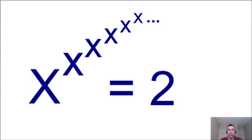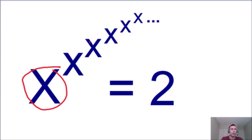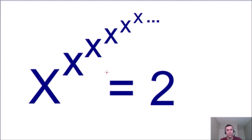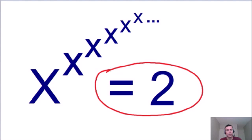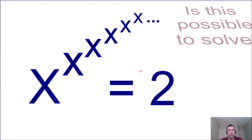Welcome to another one of my math riddles. Here we have a fun problem with infinite exponents. Notice how we have an x, and on top of this x we have an exponent of x, and on top of that x we have another exponent of x, and this goes on forever. We have an infinite number of exponents, and the whole equation is equal to 2. The question is: is there a value of x that equals a finite number? Is this even possible to solve?